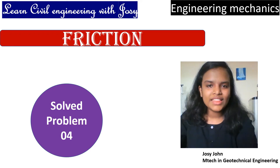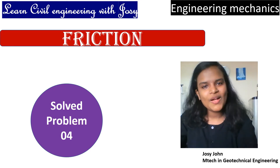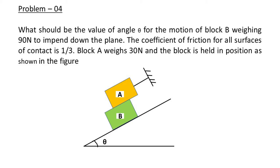This is a friction problem. What should be the value of angle theta for the motion of block B, weighing 90 N, to impend down the plane? The coefficient of friction for all surfaces of contact is 1/3. Block A weighs 30 N.